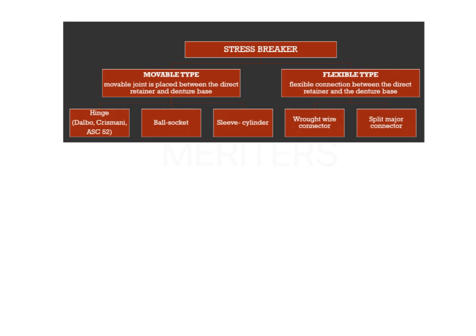Here are a few examples of stress breaker mechanisms. You can use a movable joint or a flexible type of joint. Movable joint examples are hinge attachment, ball and socket attachment, sleeve and cylinder attachment. Or you can use a flexible connection like a wrought wire connector or a split major connector.